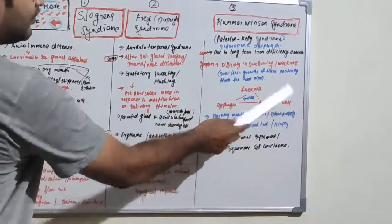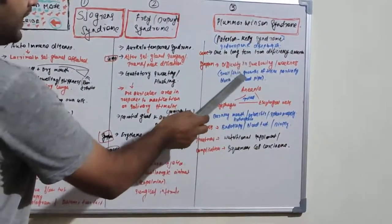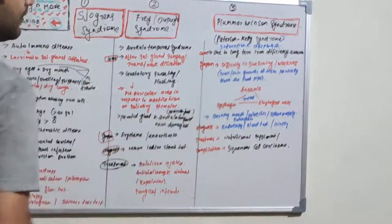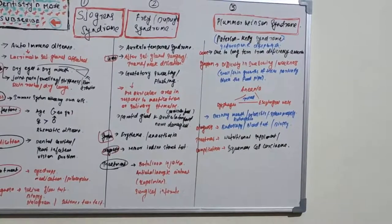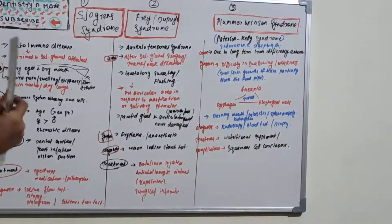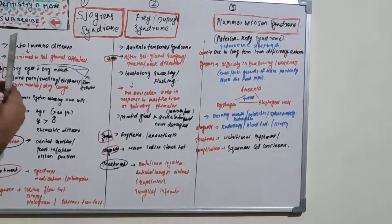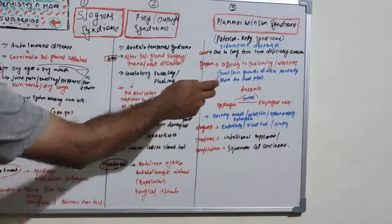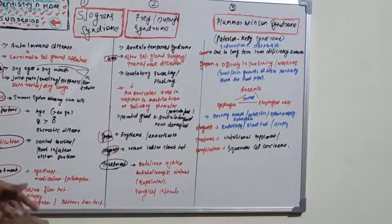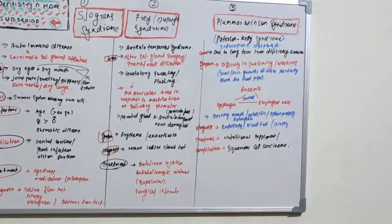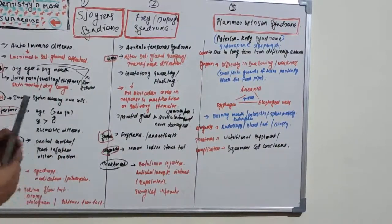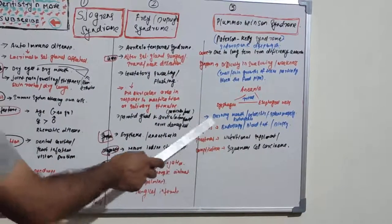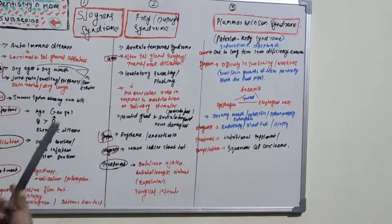Esophageal webs are small, thin growths of tissue that partially block the esophagus, which is why swallowing is difficult. Because the person is not eating properly, there will be weakness. The patient may also have burning mouth, glossitis, splenomegaly, and koilonychia — these are associated symptoms with Plummer-Vinson syndrome.